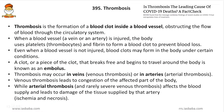Thrombosis is the formation of a blood clot inside a blood vessel. Platelets trigger the protein thrombinogen and thrombin, which trigger fibrinogen and fibrin, causing blood clotting. In thrombosis, thrombin and thrombinogen act in excess, causing unnecessary blood clots. When a blood vessel is injured, the body uses platelets and fibrin to form a clot to prevent blood loss. Even when a vessel is not injured, blood clots can occur due to excessive triggering of thrombinogen and thrombin.